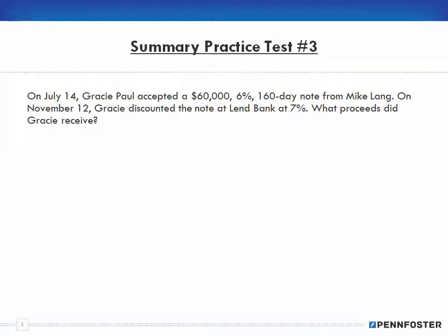On July 14th, Gracie Paul accepted a $60,000, 6%, 160-day note from Mike Lang. On November 12th, Gracie discounted the note at Lend Bank at 7%. What proceeds did Gracie receive? Same thing we've been doing all along. Interest equals face value times rate times time, and maturity value equals face value plus interest.